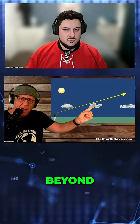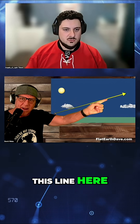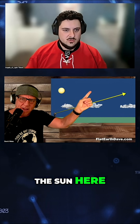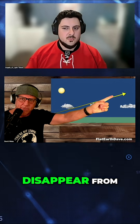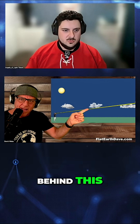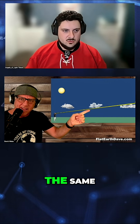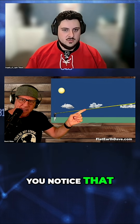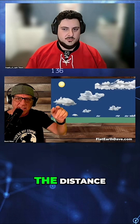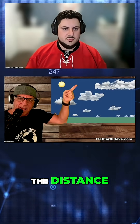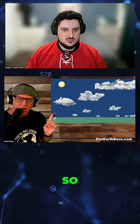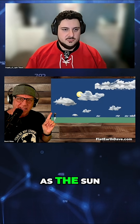When it goes beyond this line here, he'll see the sun here. But when it goes here, it's going to disappear from the bottom up behind this cloud, and the same behind this cloud. You notice that this space is getting tighter and tighter as you go into the distance. All of this gets compressed together. So this is a side view of what he's seeing.